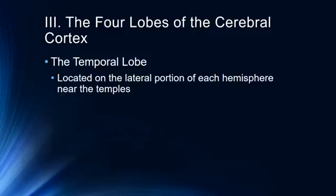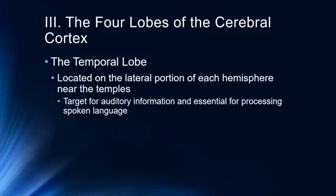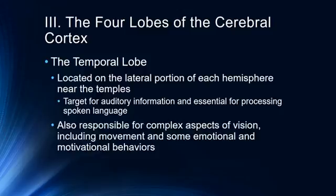The temporal lobe is located in the lateral portion of each hemisphere near the temples. This is where auditory information is processed — it is the primary auditory cortex and is essential for processing spoken language. It is also responsible for complex aspects of vision, including movement, and some emotional and motivational behaviors.